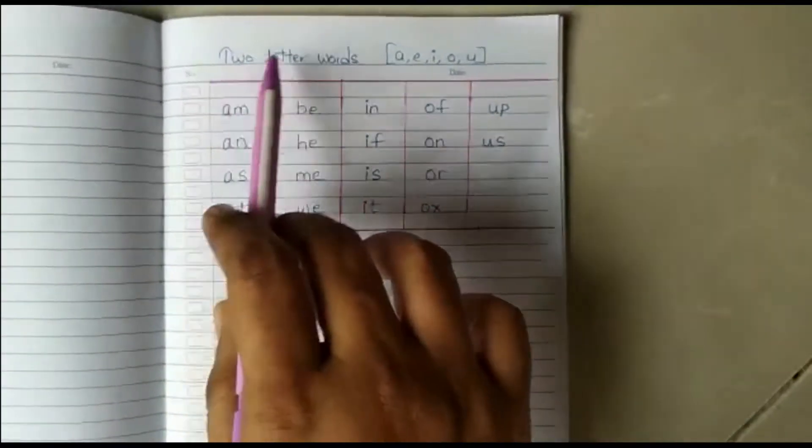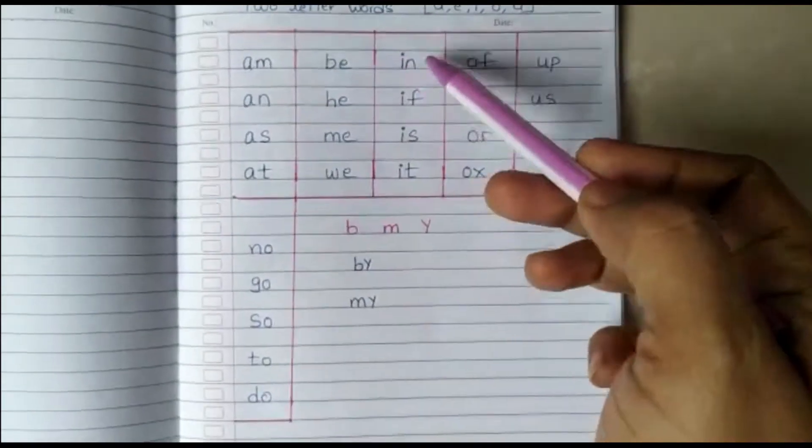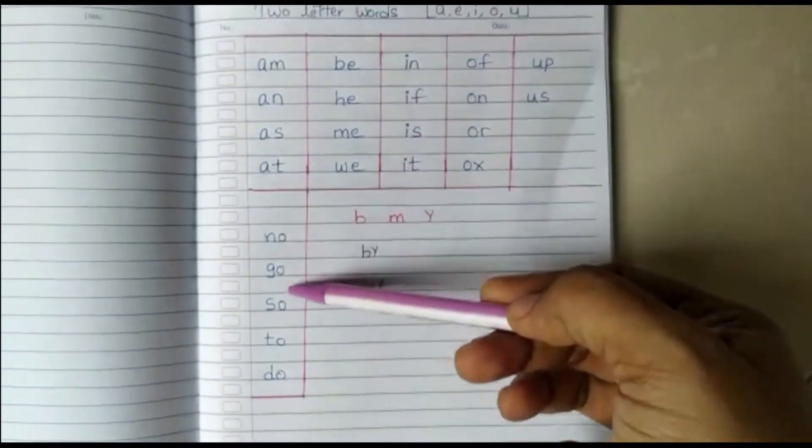These are two letter words using vowels: A, E, I, O, U and some more with O.